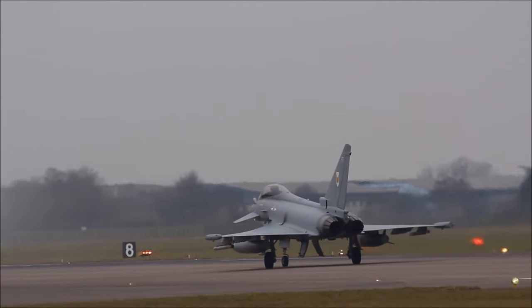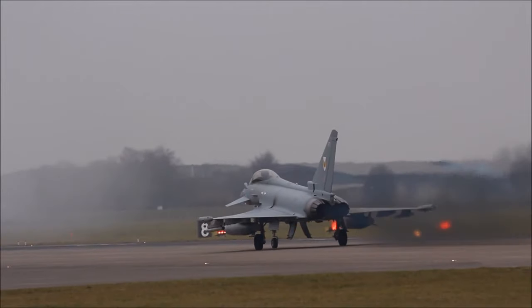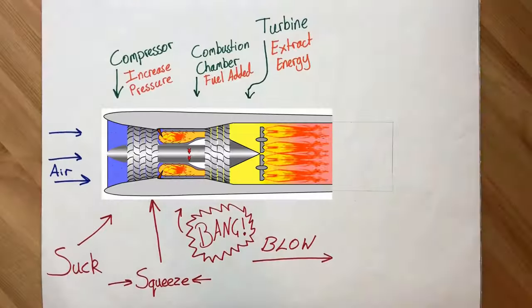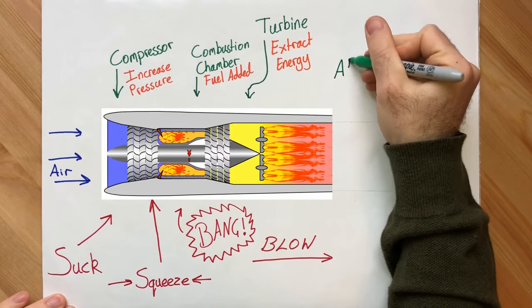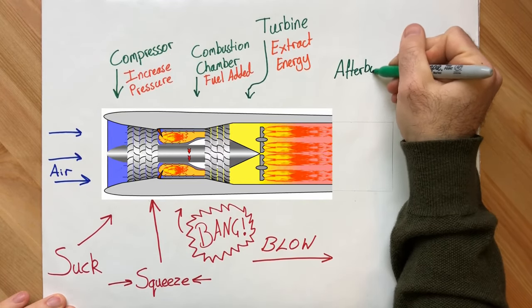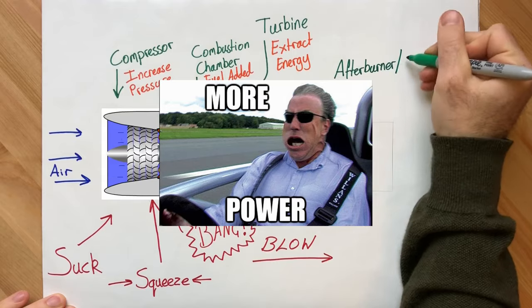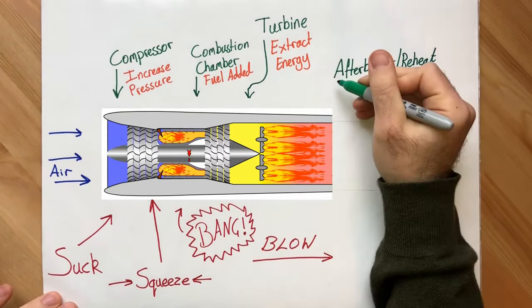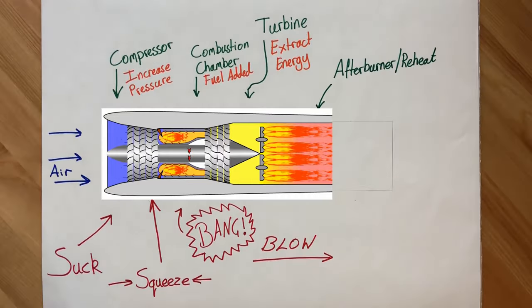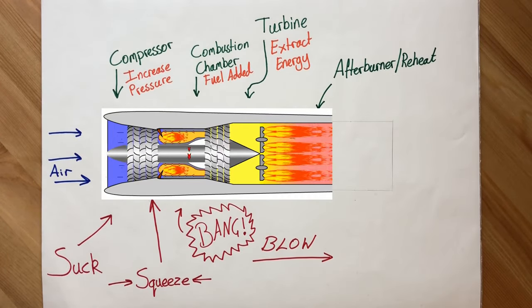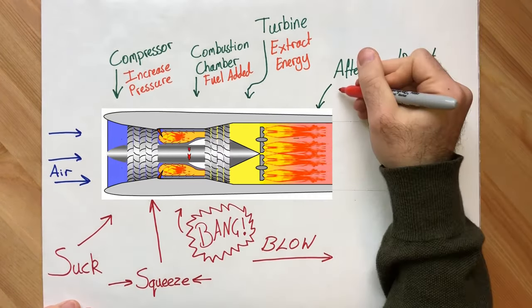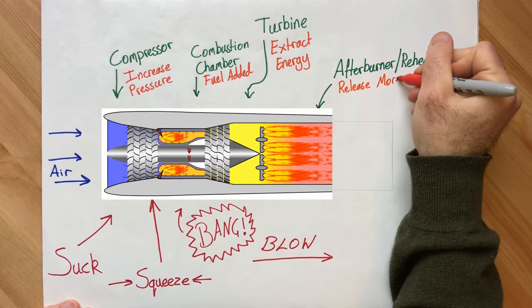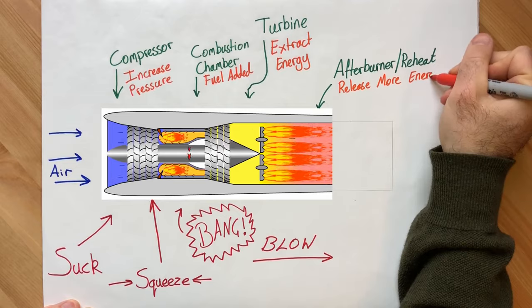But what about those vicious flames coming out the back? That's the afterburner, and it's used to provide an extra thrust boost. The afterburner simply injects more fuel into the hot gas after it rushes past the turbine. Since the air is still extremely hot, the fuel combusts and expands again very quickly. This causes the air to rush out the back with visible flames and added thrust.